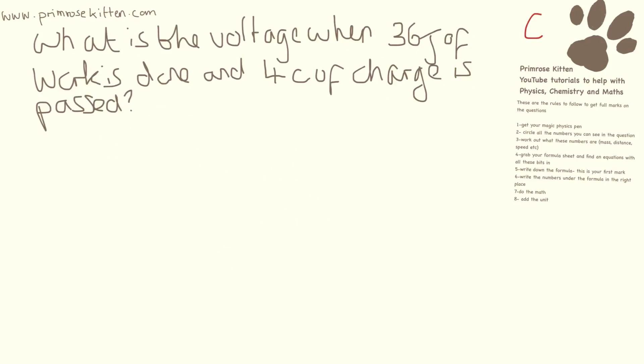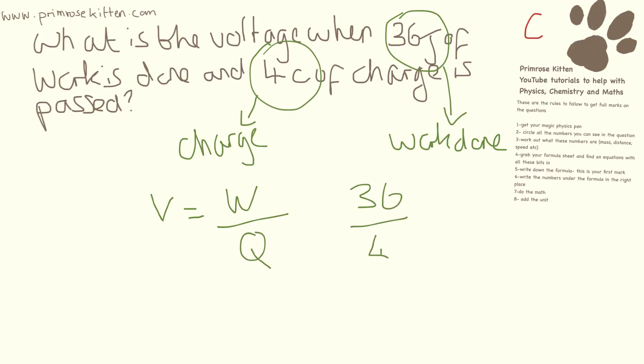What is the voltage when 36 joules of work is done and 4 coulombs of charge is passed? So this here is charge. This is work done. The equation we have is potential difference equals work done over charge. So that is 36 divided by 4. That will give us an answer of 9 volts.